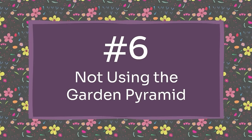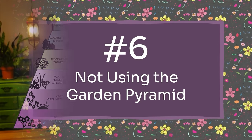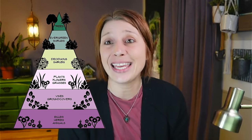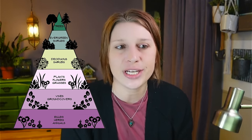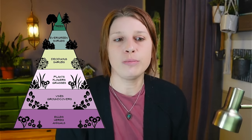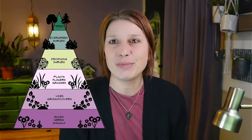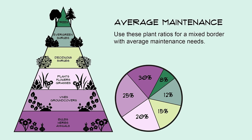Let's get into these top six mistakes and how I would fix them. Mistake number six is not using the garden pyramid for planting success. If you don't use this pyramid you're likely going to end up with a visually unbalanced landscape that's lacking depth and interest. The pyramid helps you make sure that you have a good mix of different plant types, different heights, and different shapes so that your garden is beautiful and layered.